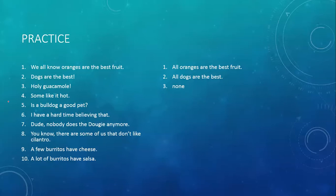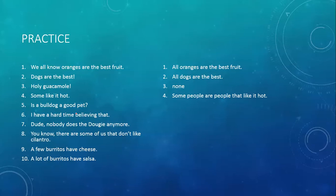Some like it hot. This translates to: some people are people that like it hot. Notice some — and you'll have to fill in what 'some' refers to. And 'like it hot' — there's no is or are in here, so you have to fill that in and make 'like it hot' into a predicate noun phrase: people that like it hot. Now, is a bulldog a good pet? This is a question. Questions don't make any statements about the world, so this is not a proposition.